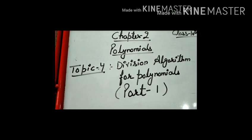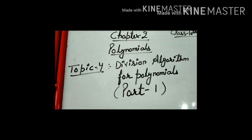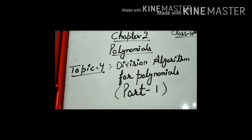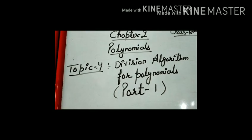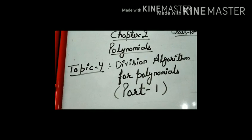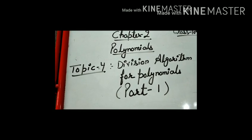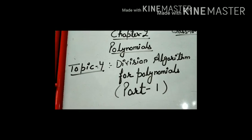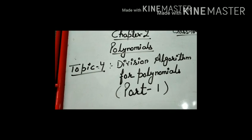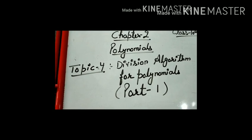In Part 1, we will find out — when we divide by any dividend — what is the divisor, quotient, and remainder. We will learn how to divide a polynomial and how to find the quotient and remainder.